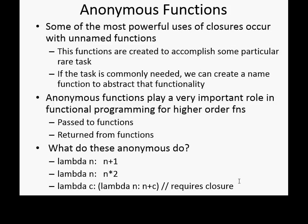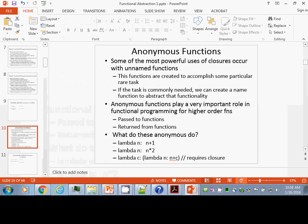Some of the most powerful uses of functions in Python and functional programming come with unnamed functions — anonymous functions. In Python you can dynamically define them: let 'increment' be bound to a lambda expression that gives the same basic operation as the static definition. These functions are created for some specific ad hoc task — we don't need to give them a name to reuse them. Anonymous functions play a very important role in functional programming, particularly for returning from or passing to other functions.